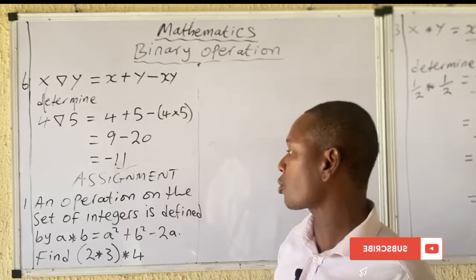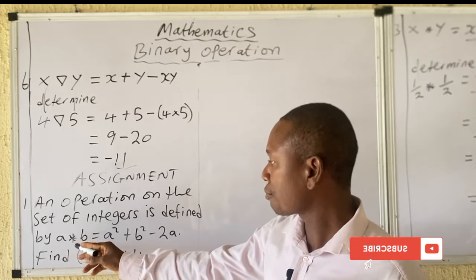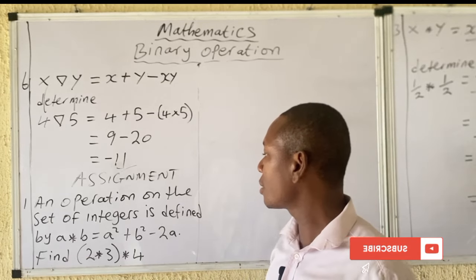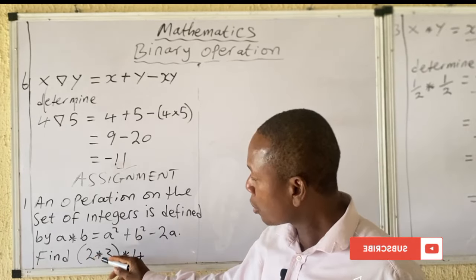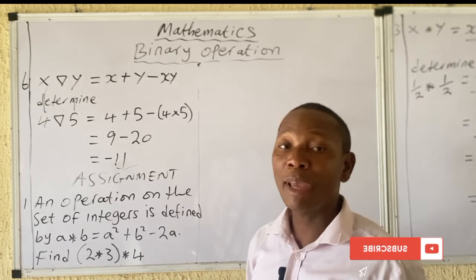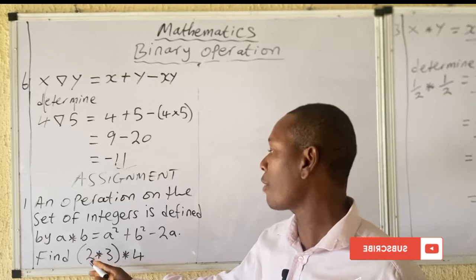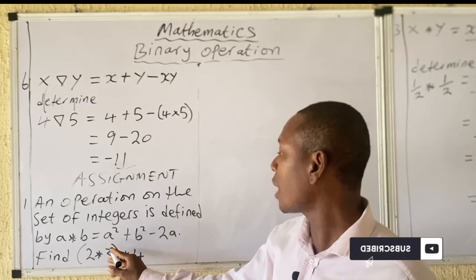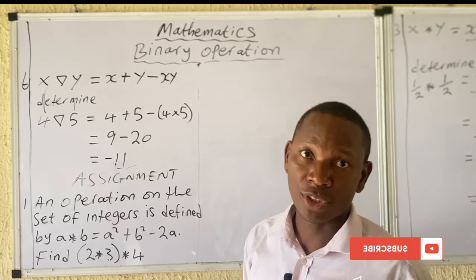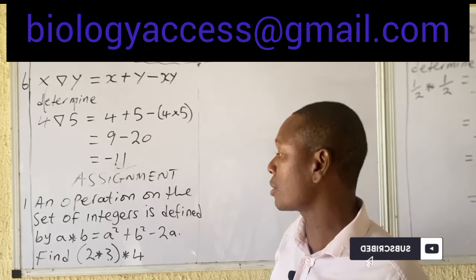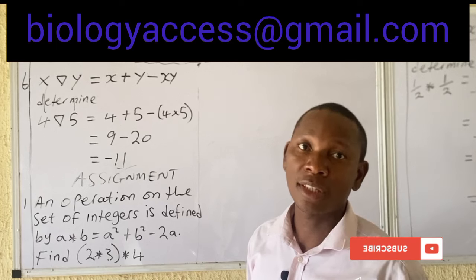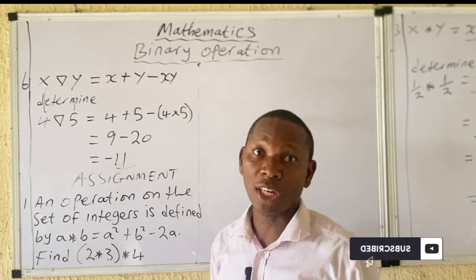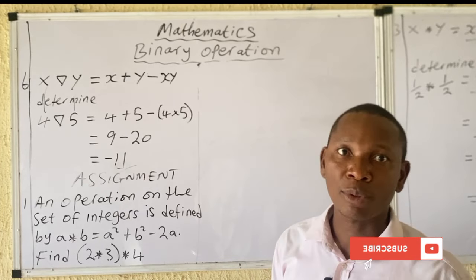That's the introductory class on binary operations. For assignment, try this operation: a★b = a² + b² − 2a. Find (2★3)★4. Remember BODMAS — solve the bracket first: find 2★3, then use that answer to solve (result)★4. Send your answer via the details on the board. In part two I'll be solving more challenging questions. Thank you for watching — please subscribe to support this channel.